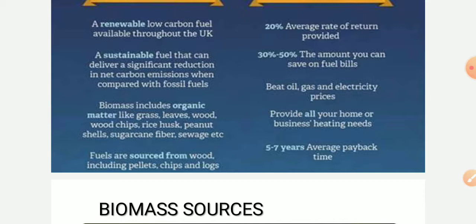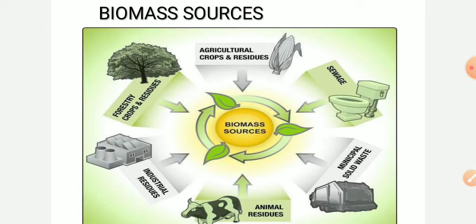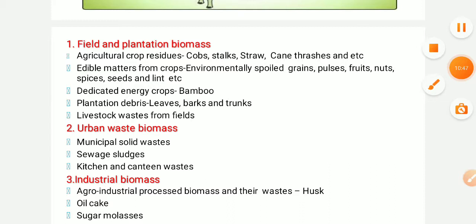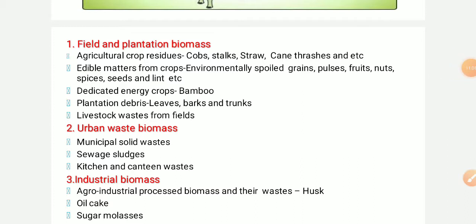Biomass includes organic matter such as grass, leaves, and wood. Biomass sources include feed and plantations. Biomass from agricultural crops includes residue crops, stocks, and trucks, as well as edible materials from crops such as grain, fruits, nuts, spices, seeds, and lint. For dedicated energy crops, examples include bamboo plantations, debris, trees, leaves, bark, and trunks.